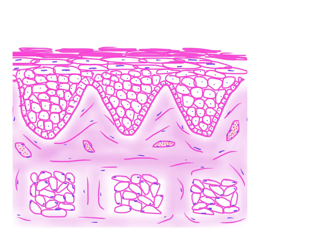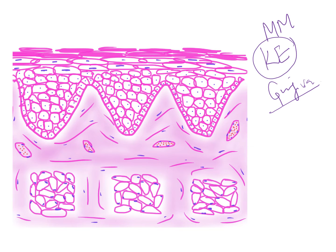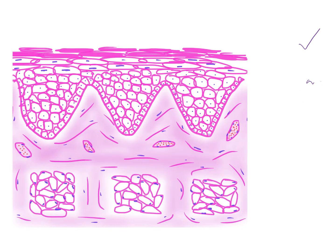Now let's come to the histology of the hard palate. The hard palate is our masticatory mucosa, so it has keratinized epithelium like that of gingiva. In the hard palate, there is keratinized epithelium, but it is orthokeratinized, meaning the nucleus is not present. In the topmost layer there is no nucleus, so it is called orthokeratinized stratified squamous epithelium.